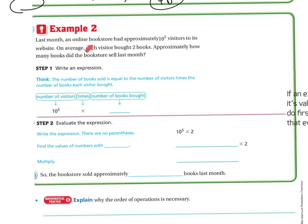Example 2. Last month, an online bookstore had approximately 10 to the fifth power visitors to its website. On average, each visitor bought 2 books. Approximately how many books did the bookstore sell last month? We write an expression: number of books sold equals number of visitors times number of books each visitor bought.